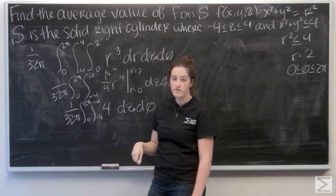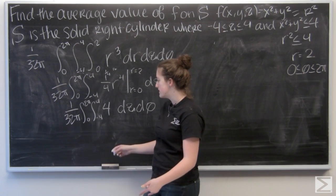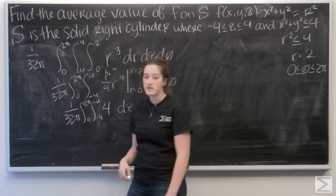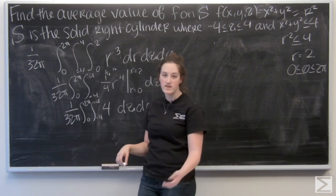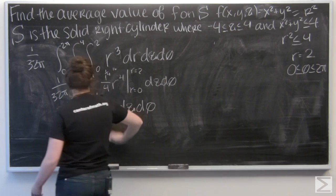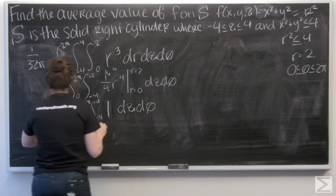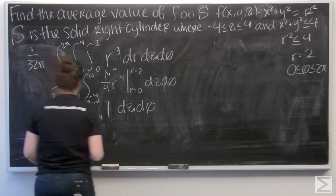So now I'm integrating 4 with respect to z. But first, let me try to simplify this a little bit. I know I have 1 over 32 on the outside. But if I multiply that with my 4, I can actually get 1 eighth, which will make it a little bit easier.